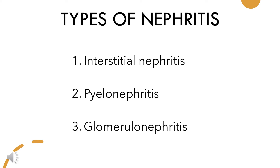Next are the types of nephritis. There are mainly three types of nephritis and they are interstitial nephritis, pyelonephritis, and glomerulonephritis.